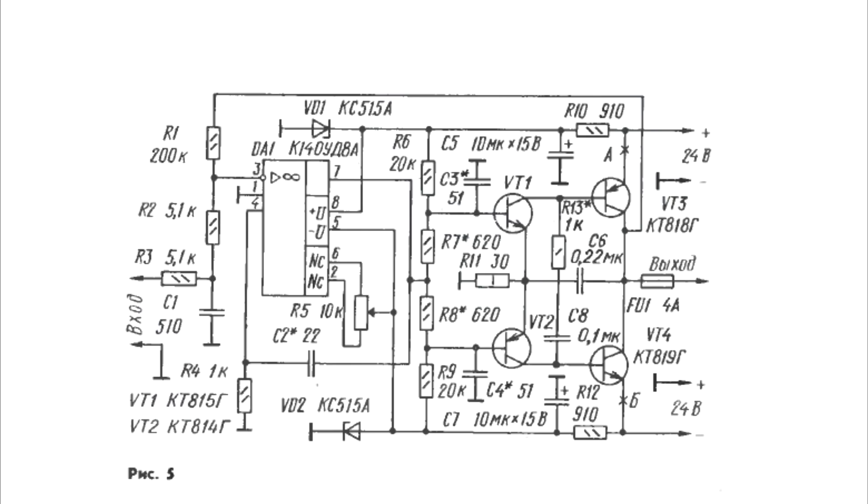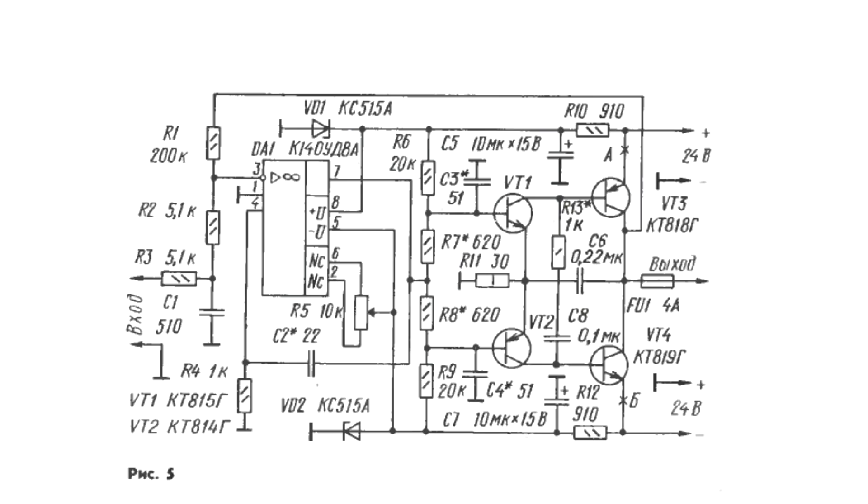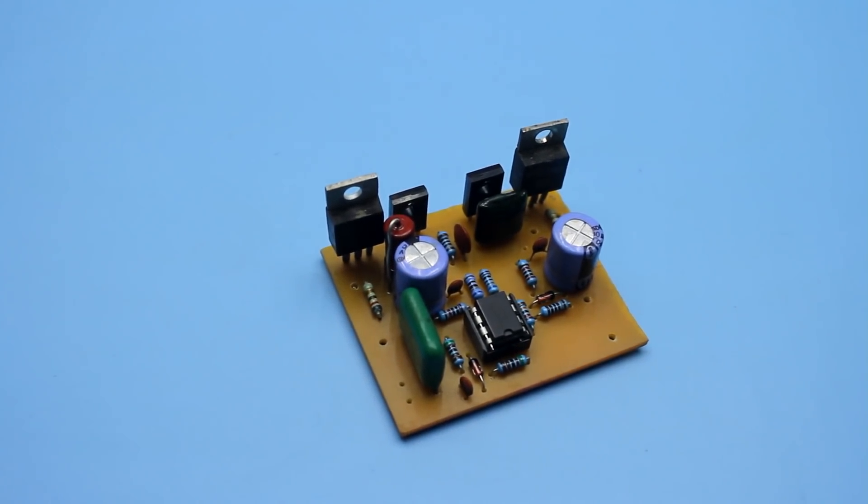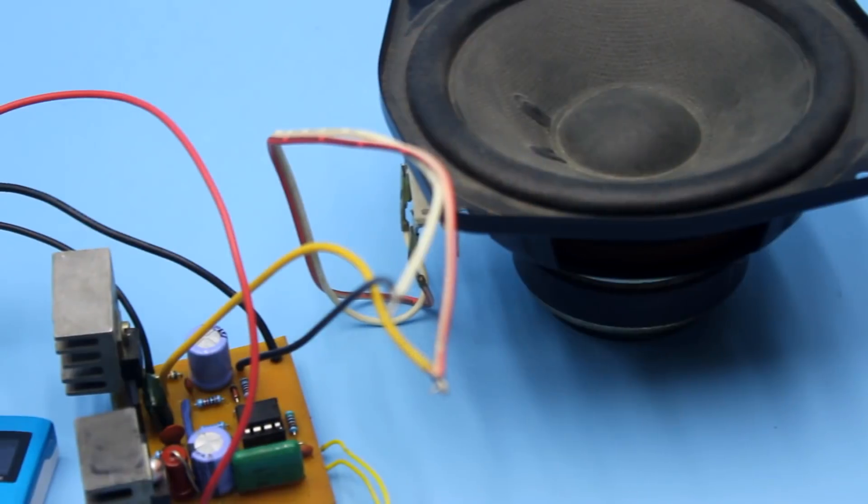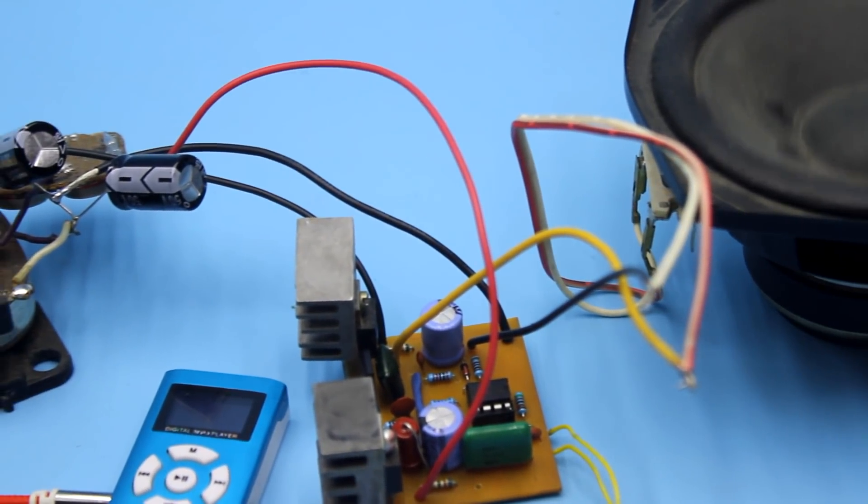The presented circuit was published in the Journal of Radio in 1991. This is the legendary amplifier of Dorofeev, so it has a fairly old age. The genius of the circuit is simplicity. Despite the minimum number of components, with an appropriate power source, this amplifier is able to give a power up to 50 watts to a load of 4 ohms. This is very good.